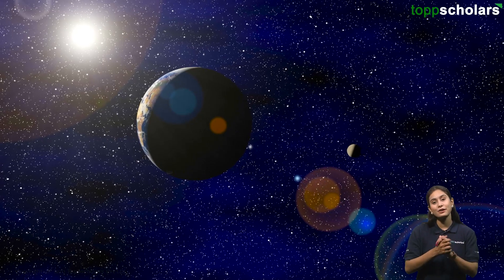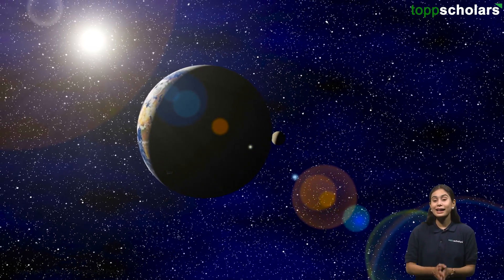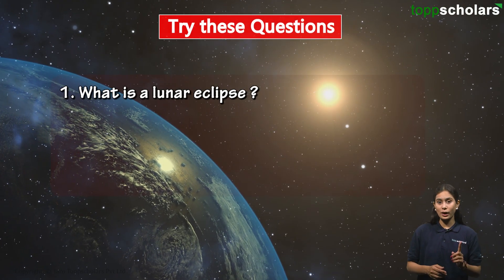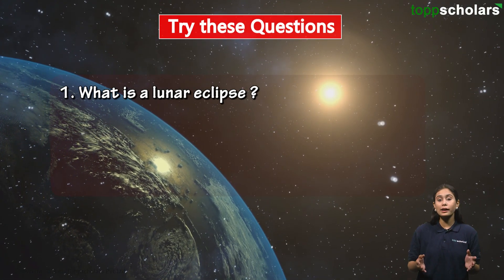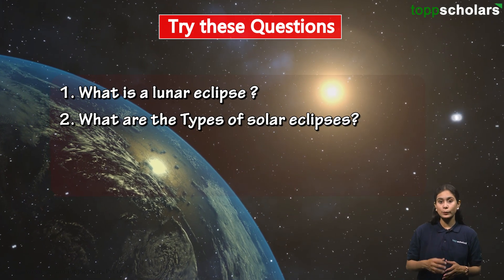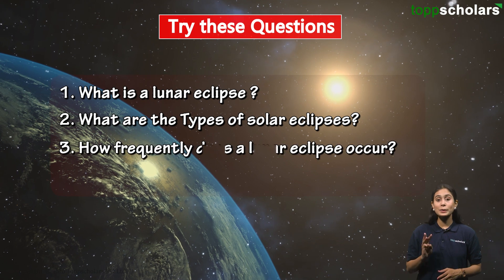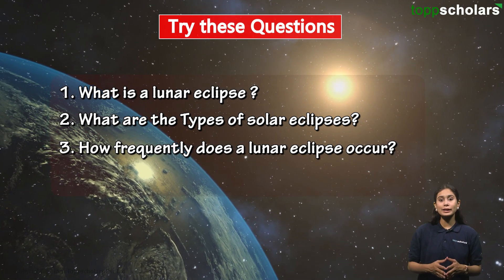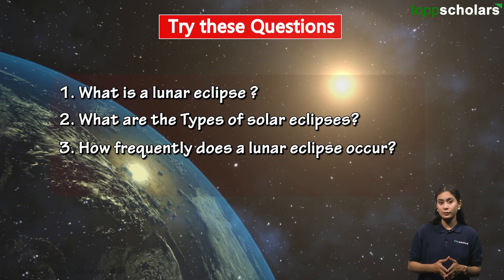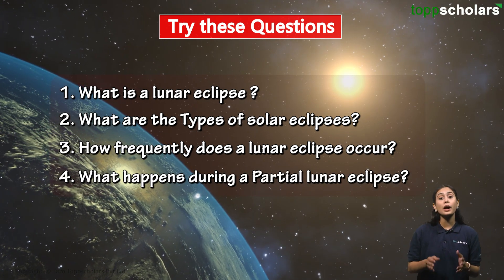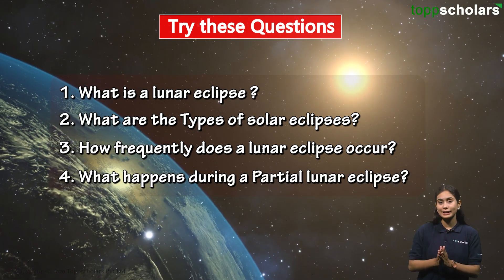With this we have come to the end of this topic. We hope you had fun learning about eclipses. Now let's practice some questions: Question 1 — What is a lunar eclipse? Question 2 — What are the types of solar eclipses? Question 3 — How frequently does a lunar eclipse occur? Question 4 — What happens during a partial lunar eclipse?